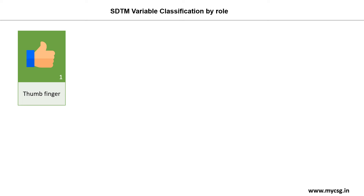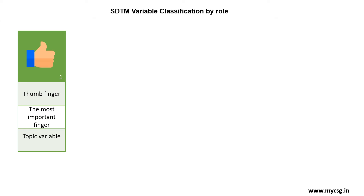The first one is the thumb. Let us associate the tag 'the most important finger' to the thumb. The most important variable on any observation in an SDTM dataset is the topic variable, which conveys the focus of the observation.